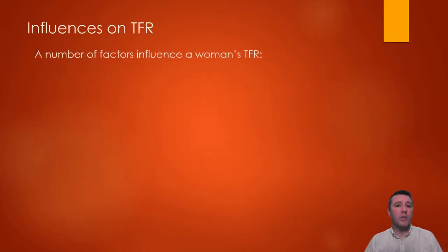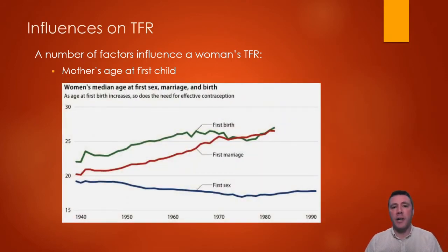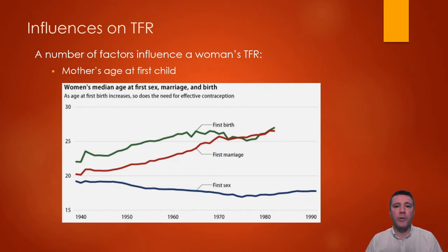Let's look more closely at specific individual variables that influence total fertility rate. If a female has a child earlier in life, she will have more childbearing years, allowing her to have a greater number of children. In the second half of the 1900s — a trend that has continued to today — females are waiting longer before having their first child. In the 1940s, women on average began having children at around 22 to 23 years old, but that age has most recently reached almost 30 years old.